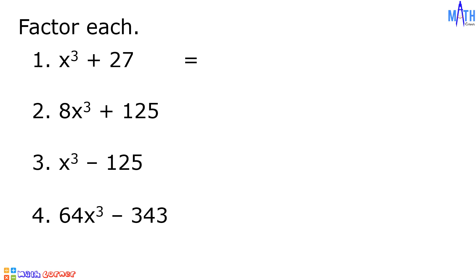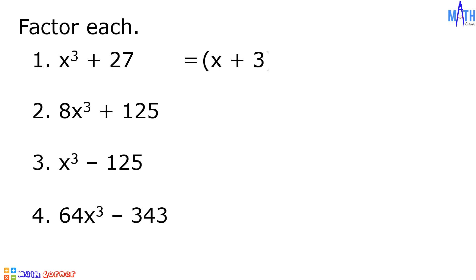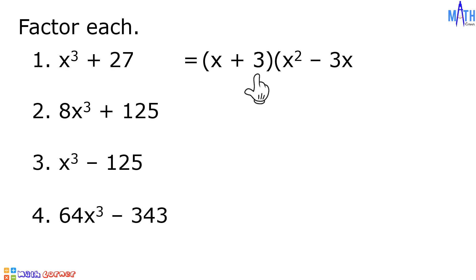For the binomial factor, the cube root of x cubed is equal to x. The cube root of 27 is equal to 3, since 3 times 3 times 3 is equal to 27. So the binomial factor is x plus 3. For the trinomial factor, x times x is equal to x squared. The opposite of x times 3 is negative 3x. And 3 times 3 is equal to 9. Therefore, x cubed plus 27 is equal to quantity x plus 3 times quantity x squared minus 3x plus 9.